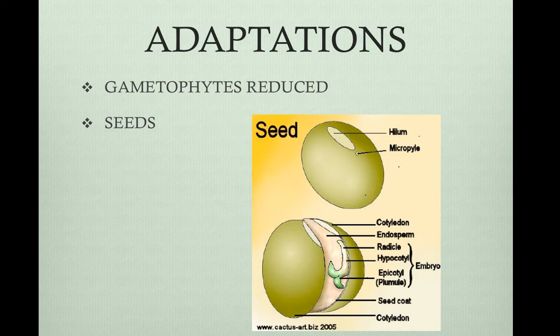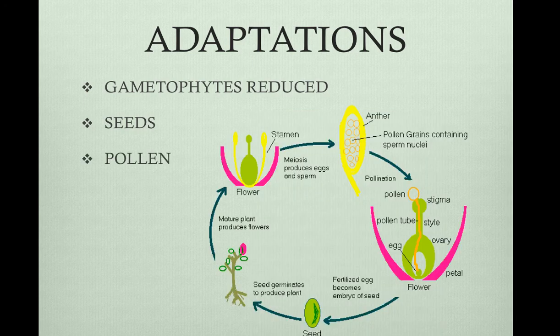The ovule contains the integument, which is a layer of sporophyte tissue, the megasporangium, which produces megaspores, and the megaspore itself. The female gametophyte develops inside a megaspore and produces eggs. When the egg is fertilized, a sporophyte embryo forms, and the whole ovule develops into a seed. Pollen is when the microspores develop into pollen grains. Pollen grains mature to become the male gametophyte. Pollen contributes to the major success of plants on land. Pollination is the transfer of pollen to ovules.